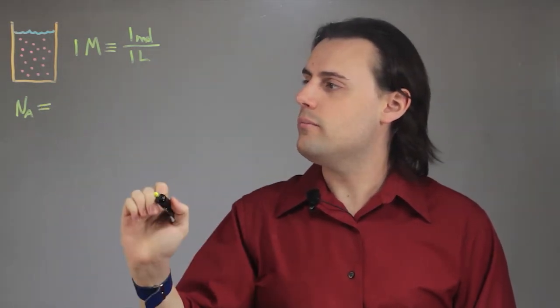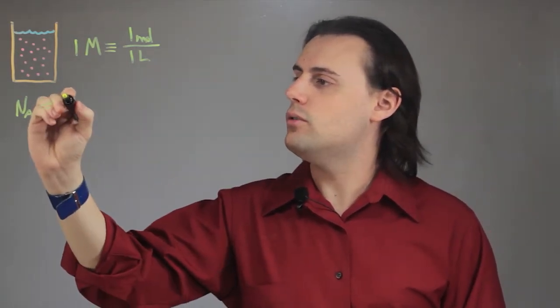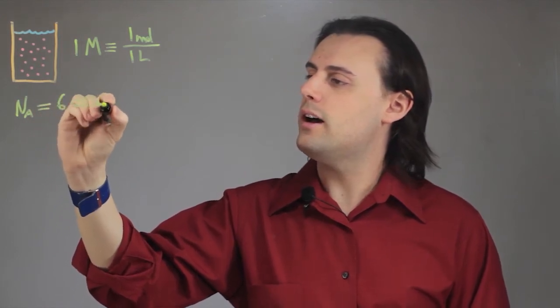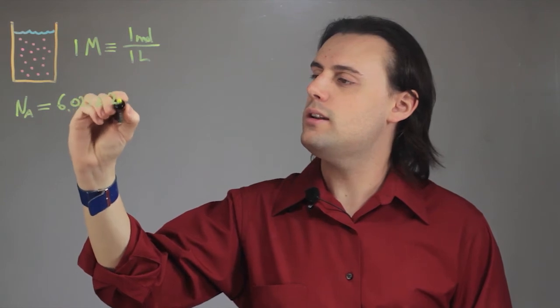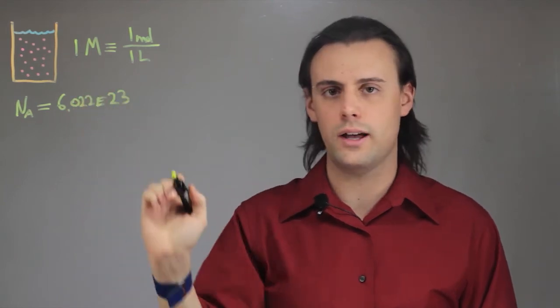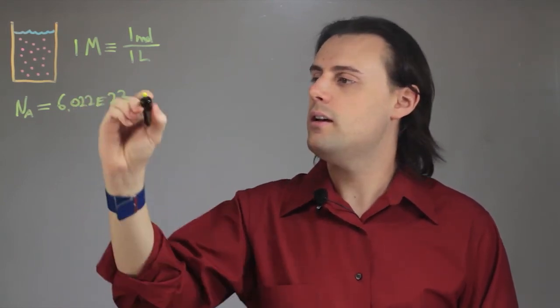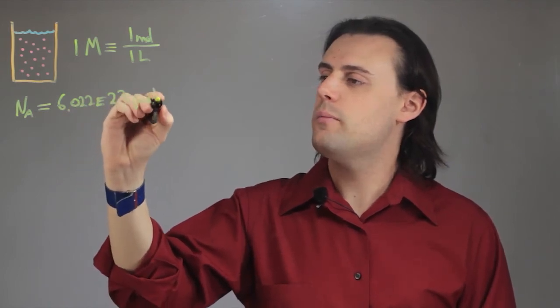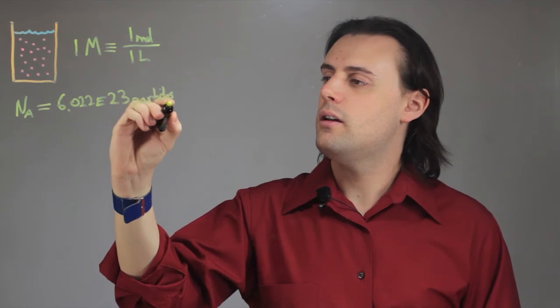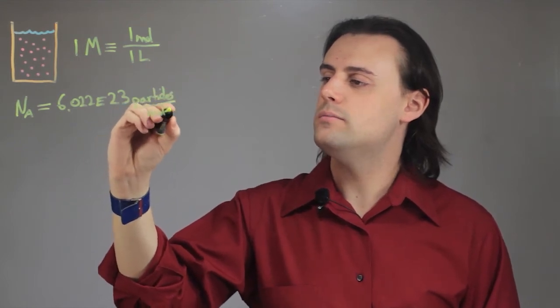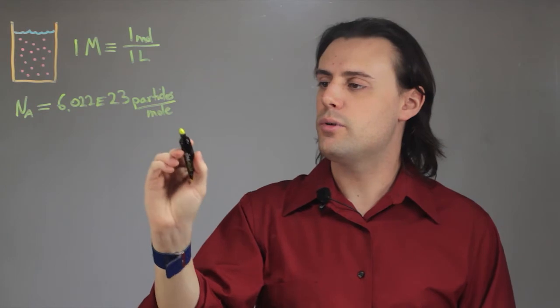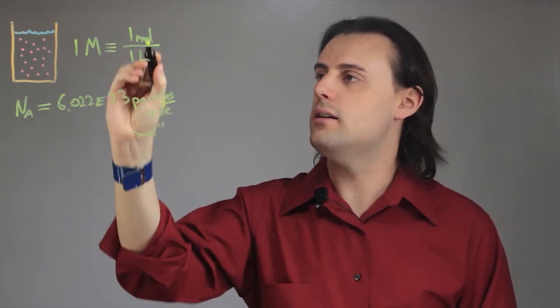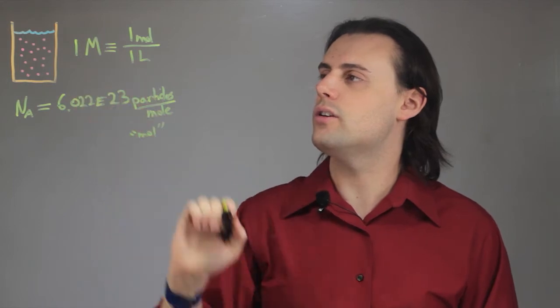Avogadro's number is equal to 6.022, approximately, times 10 to the 23. Here I'm using the shorthand scientific notation. This giant number of particles in one mole. So you can abbreviate mole as just mol, like I did up here in the definition for one molar.